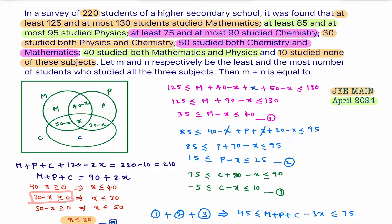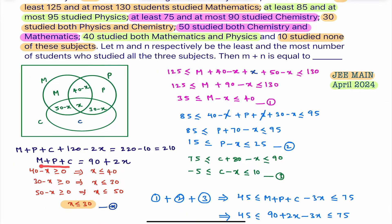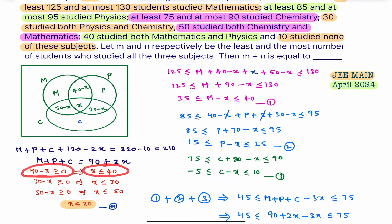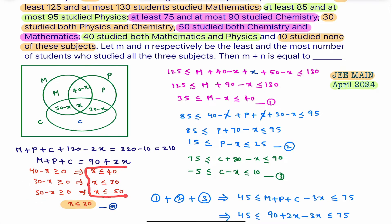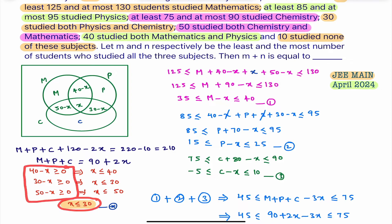None of the individual Venn diagram regions can be negative — so 30 minus x must be greater than or equal to 0, and similarly for all three pairwise-only regions. Simplifying each constraint gives x ≤ 40, x ≤ 30, and so on. Taking the intersection of all three constraints, we get x ≤ 30.